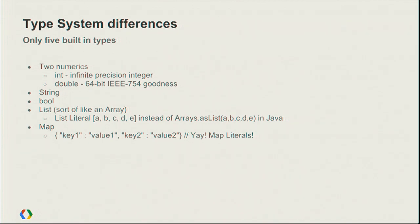Let's talk about the type system differences. There are really only five built-in types you need to worry about. Two numeric types: int and double. The integer is infinite precision, so you never have to worry about overflow. Doubles are 64-bit IEEE 754. Dart has a string class, a bool type — not boolean, but bool. And two fundamental collection types: list and map. Like every other language except Java, they have first-class support — there are literals for maps and lists built into the language. You define a list literal with square brackets and a map with curly braces, much like JSON and JavaScript.